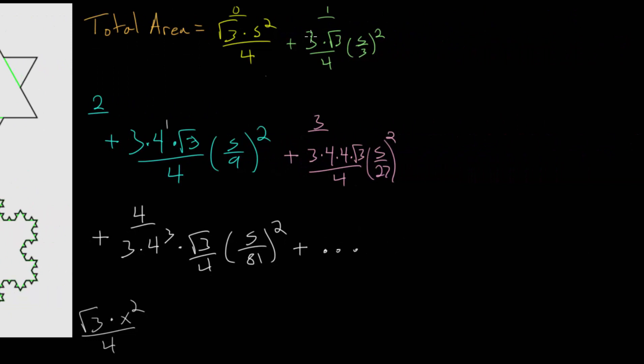We can begin by noticing that each of these terms, as we carry this out to infinity, has a square root of 3, has division by 4, and has an s squared in it.